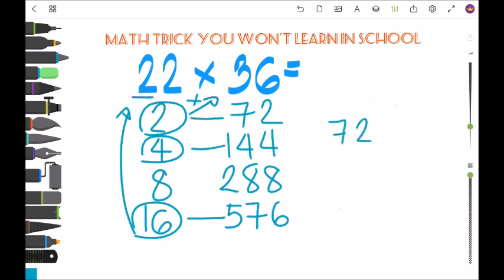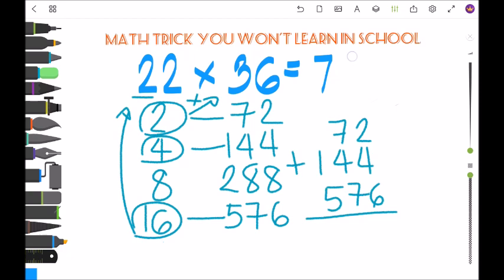72 plus 144 plus 576. So the answer is 792.